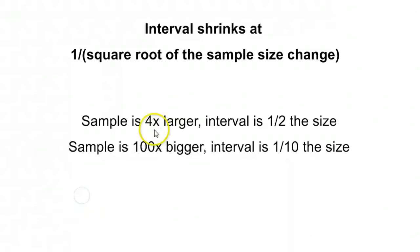So, to put that in clearer words, if the sample is 4 times bigger, the interval is 1 half the size. You take the square root of 4 and throw it on the bottom. If the sample is 100 times bigger, the square root of 100 is 10, the interval is 1 tenth the size. And that's what we saw.